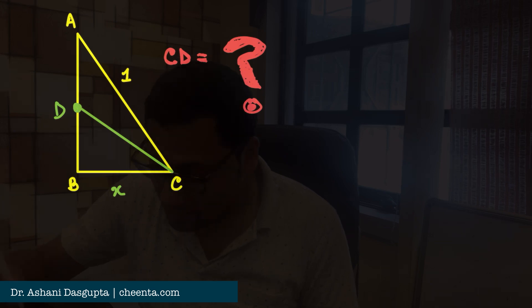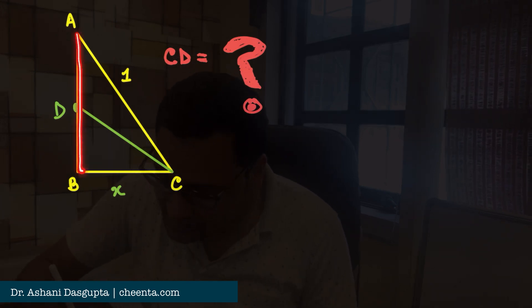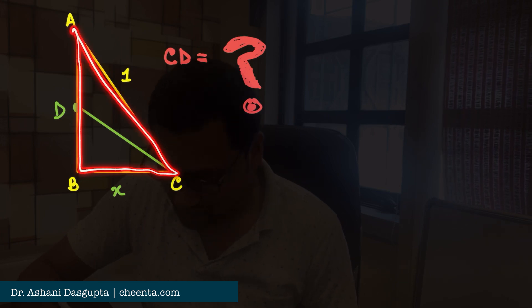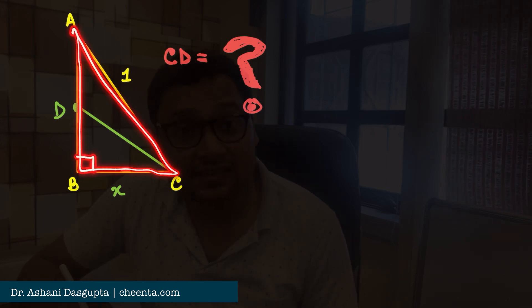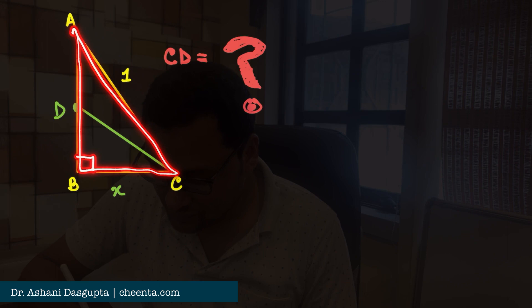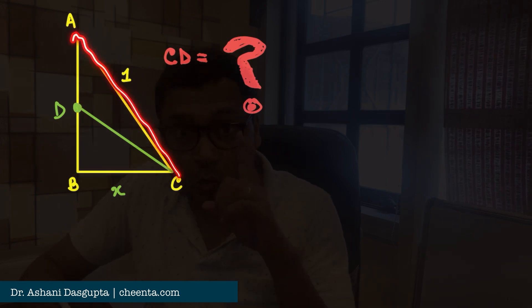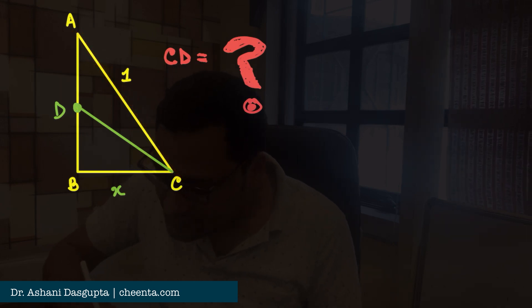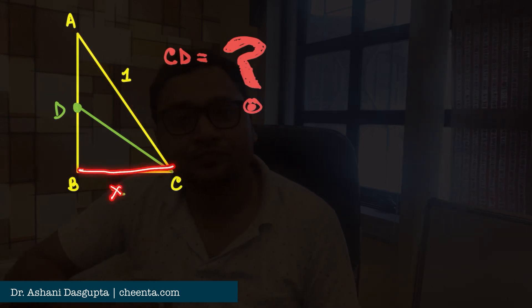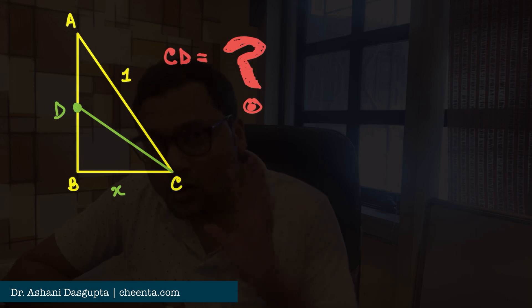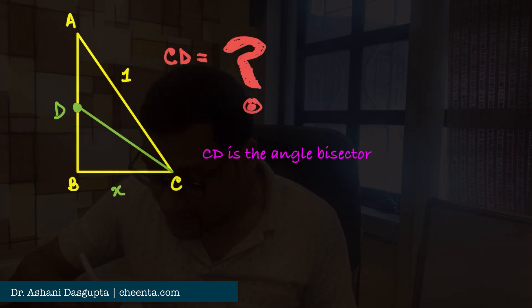It's a geometry problem and it says that ABC is a right-angled triangle. Angle B is 90 degrees. That's given. AC is given to be 1, the length of AC, the hypotenuse. AB is X and BC is X. Our goal is to find out the length of CD.